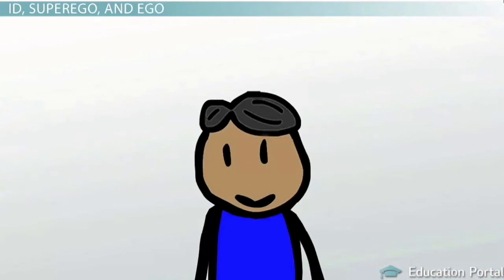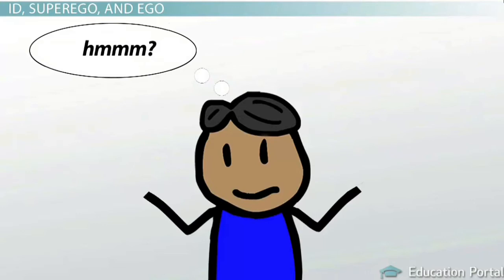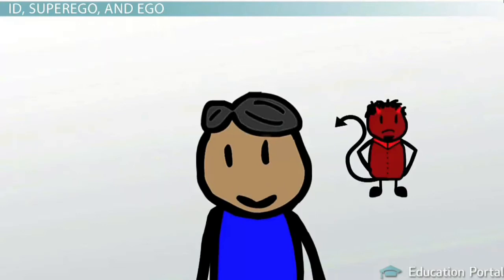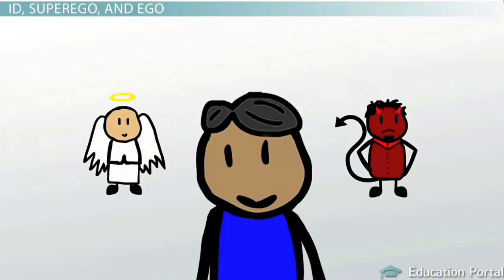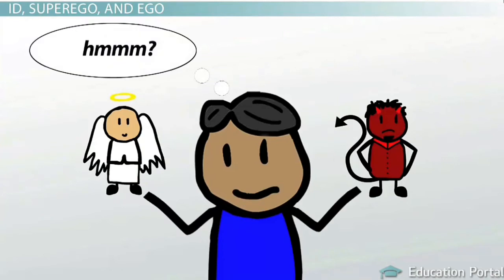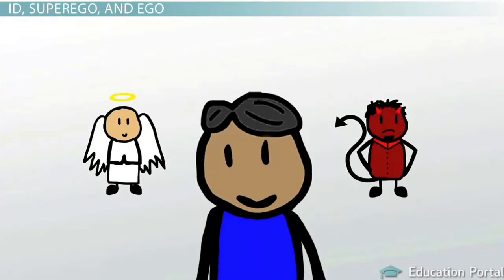Remember the cartoons you used to watch as a child? The main character is confronted with a choice. On his left shoulder is a little devil pushing him toward a bad choice. On his right shoulder, a little angel is encouraging him to make a good choice. He is stuck in the middle and forced to make a decision that will affect him.